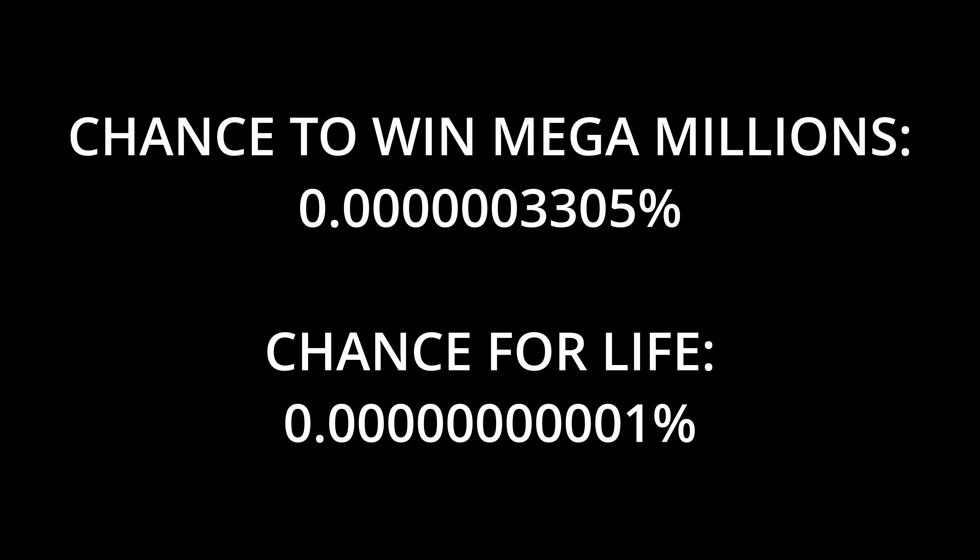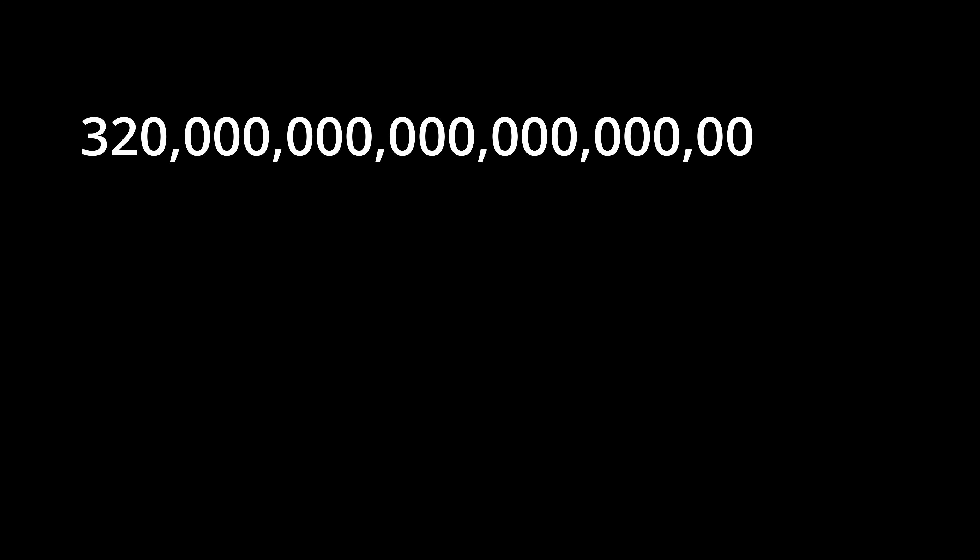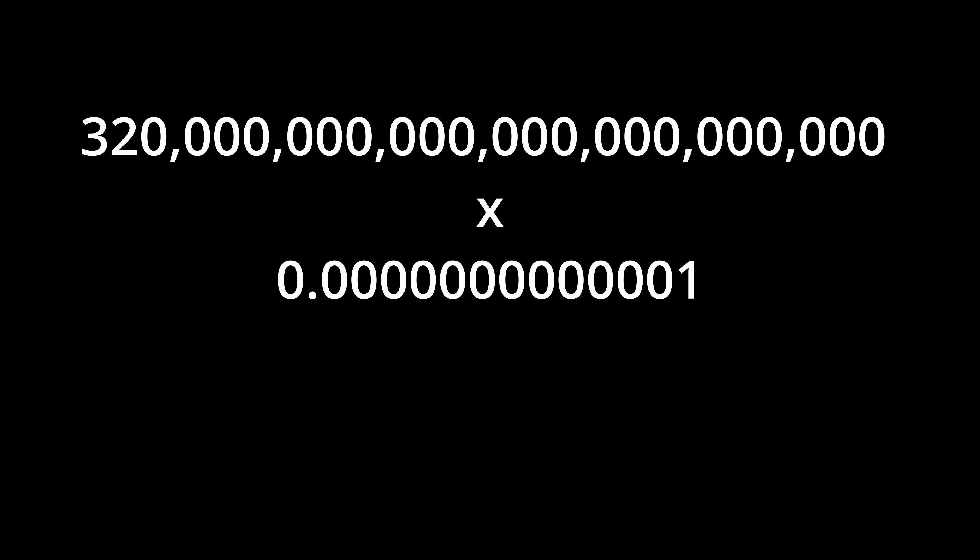That is a very small percentage. In fact, it is far less likely than winning the Mega Millions lottery. So, if one trillionth of a percent of all planets contain life, there would be 3.2 billion planets with some form of life.